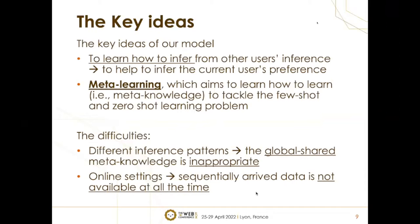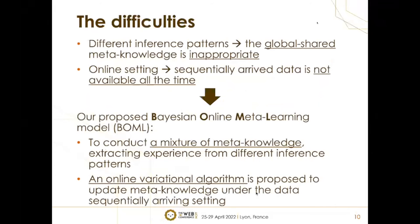But there are two difficulties. The first is that the global shared meta-knowledge in meta-learning is inappropriate for extracting experience from different inference patterns. The second is that data is not available all the time under online settings, which conflicts with standard meta-learning. Therefore, we propose a Bayesian online meta-learning model for personalized product search, including a mixture of meta-knowledge to extract experience from various inference patterns, and an online variational algorithm to update such meta-knowledge under the online setting.